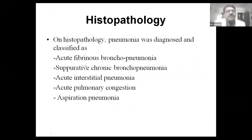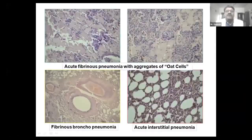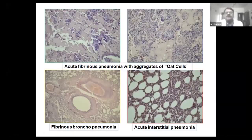On histopathology, we classified this pneumonia into acute fibrinous bronchopneumonia, suppurative chronic bronchopneumonia, acute interstitial pneumonia, acute pulmonary congestion, and aspiration pneumonia. On pathology, we found that in acute fibrinous pneumonia there are a lot of aggregates of oat cells. These oat cells are the characteristic features of Pasteurella pneumonia, along with fibrinous bronchopneumonia and interstitial pneumonia.